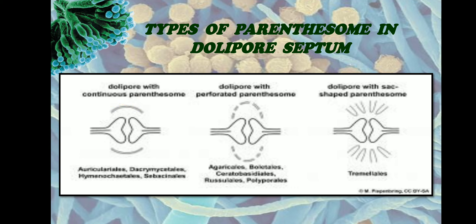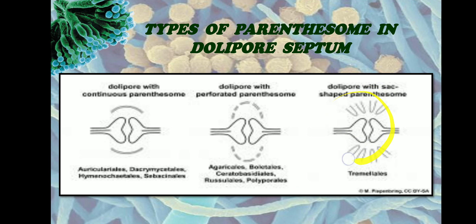In some dolipore septa, the parenthosome is incomplete — there are pores or perforations between the parenthosomes. In some fungi the parenthosomes are sac-shaped. So parenthosomes are of three types: continuous type, perforate type, and sac-shaped parenthosomes.